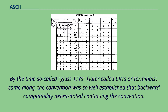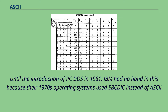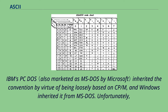DEC operating systems used both characters to mark the end of a line so that the console device would work. By the time so-called glass TTYs came along, the convention was so well established that backward compatibility necessitated continuing it. When Gary Kildall created CP/M he was inspired by some command line interface conventions used in DEC RT-11. Until the introduction of PC-DOS in 1981, IBM had no hand in this because their 1970s operating systems used EBCDIC instead of ASCII, and they were oriented toward punch card input and line printer output on which the concept of carriage return was meaningless. IBM's PC-DOS inherited the convention by virtue of being loosely based on CP/M, and Windows inherited it from MS-DOS.